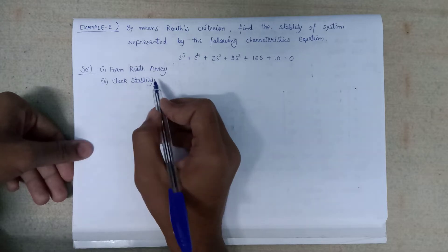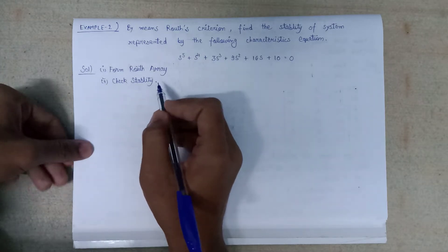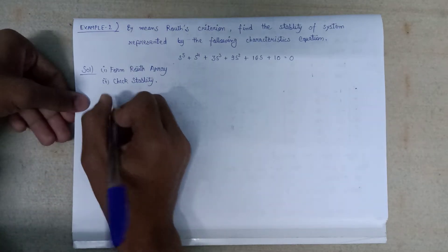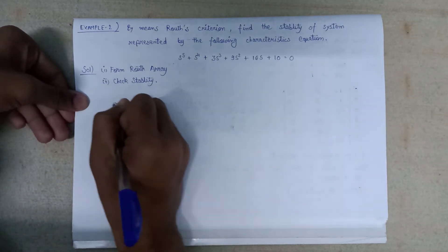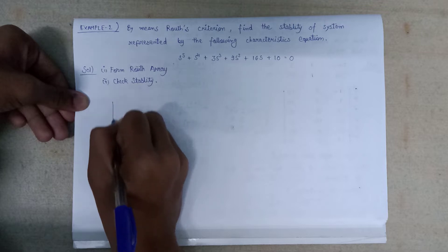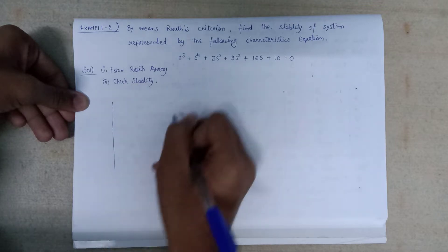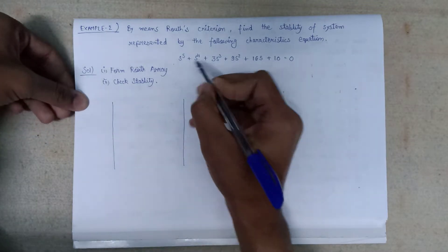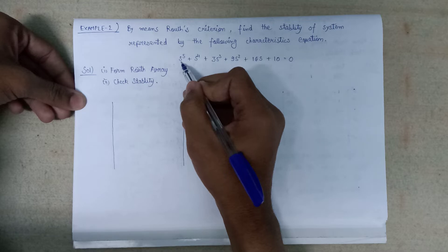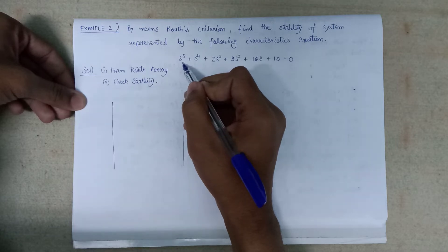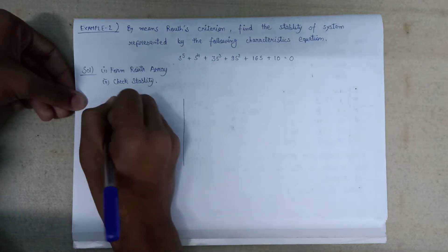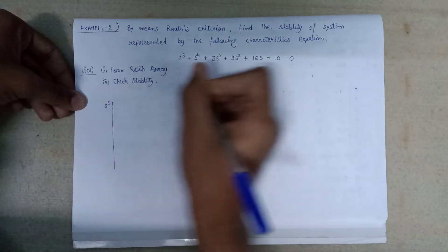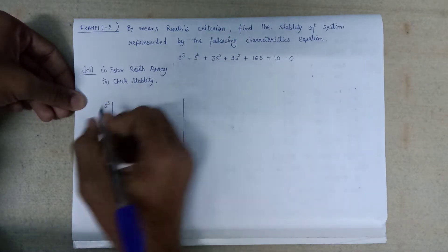Let's first perform the Routh array. The Routh array will look like this — the highest power is s to the power 5, so we write s to the power 5, then s to the power 4, s to the power 3.